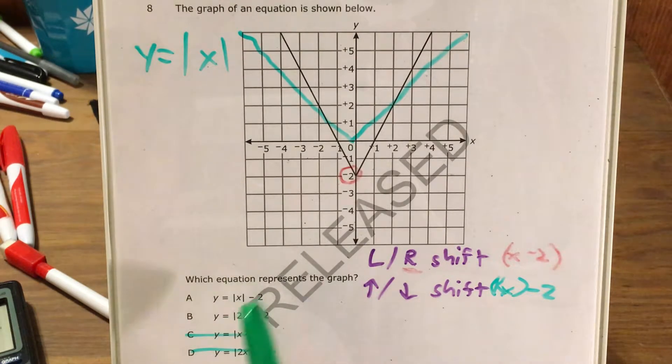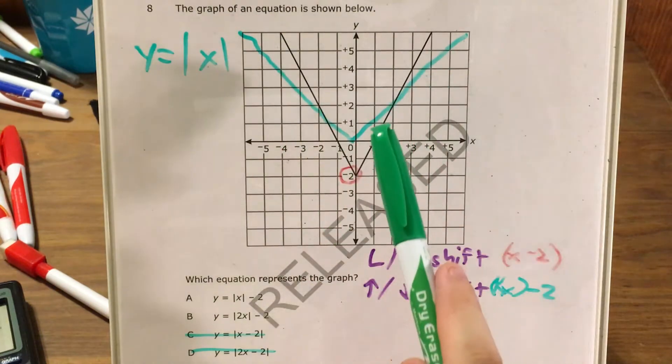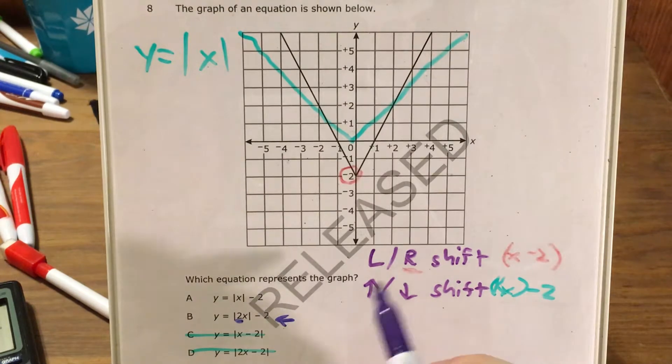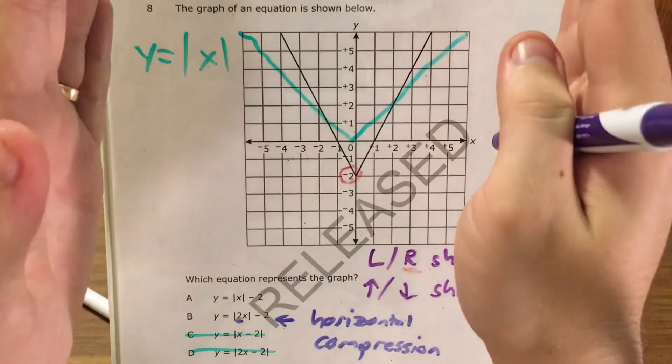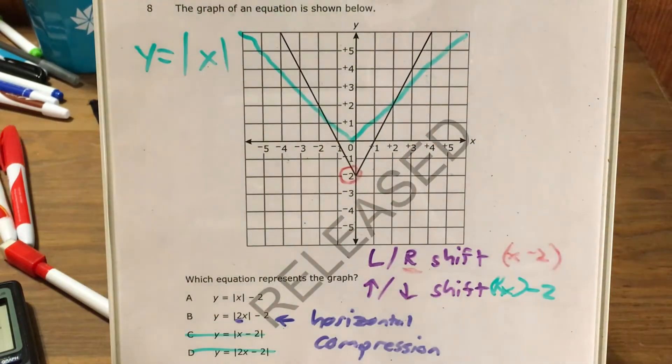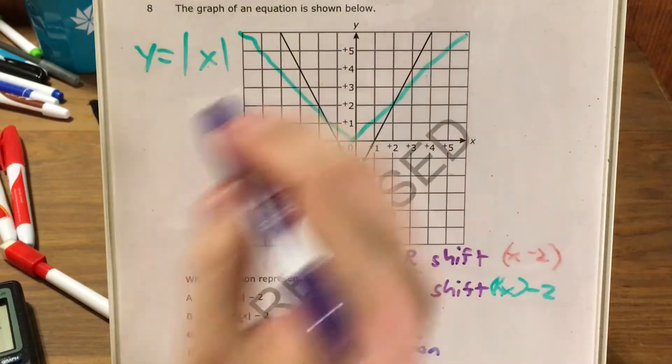So the only question is, is this the absolute value of x minus 2, or is it the absolute value of 2x minus 2? Now if you recall, whenever we see the number 2 written as a coefficient of our x inside our absolute value bars, we call this horizontal compression, which is essentially like I took the original absolute value function and squeezed it in a little bit, and that looks about like what's happening here.